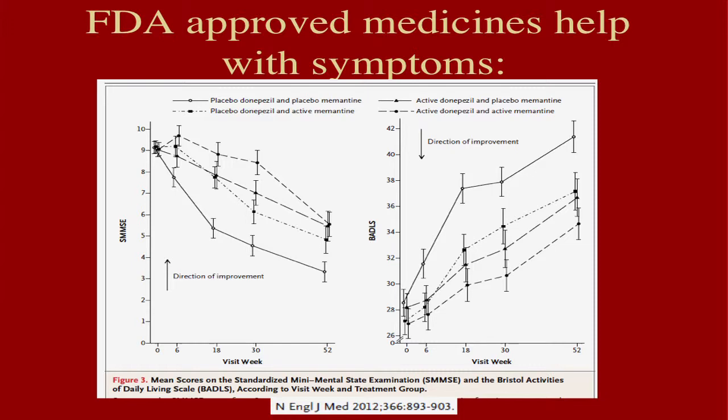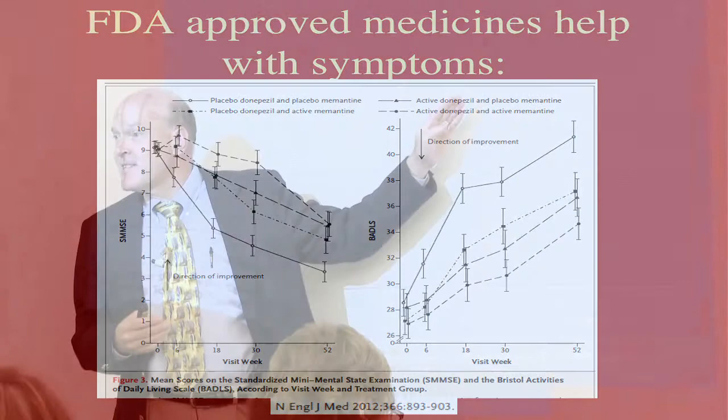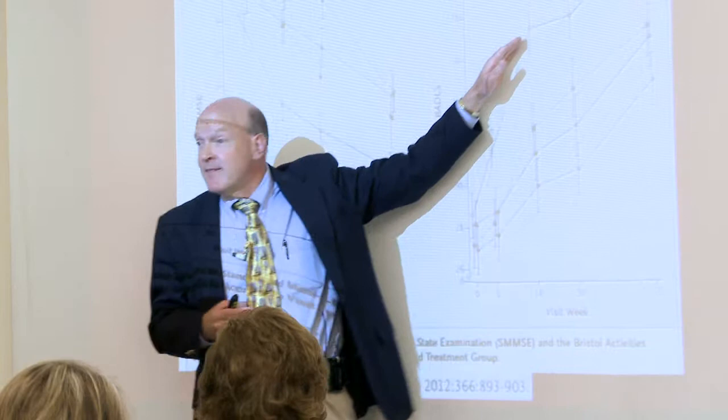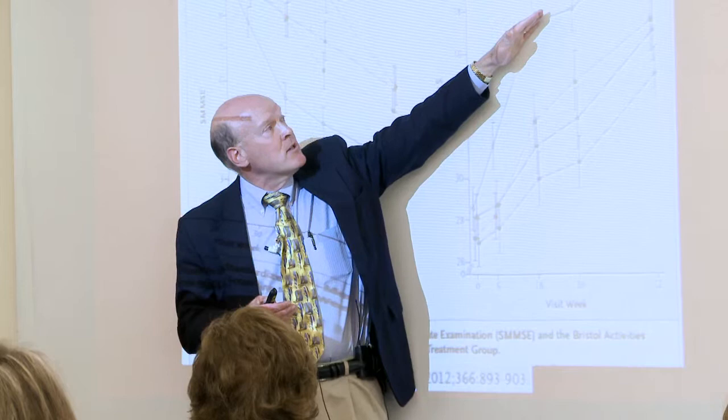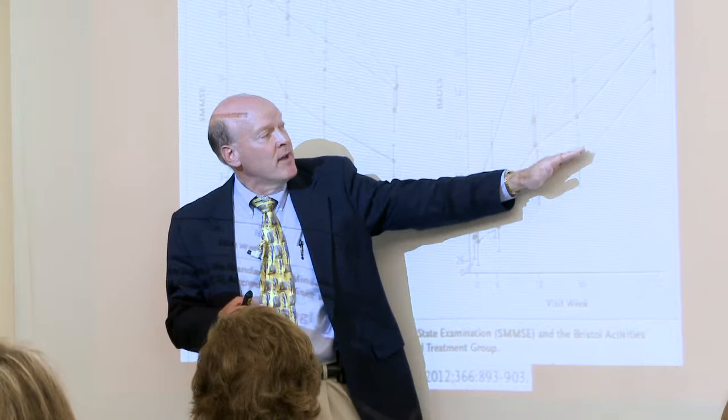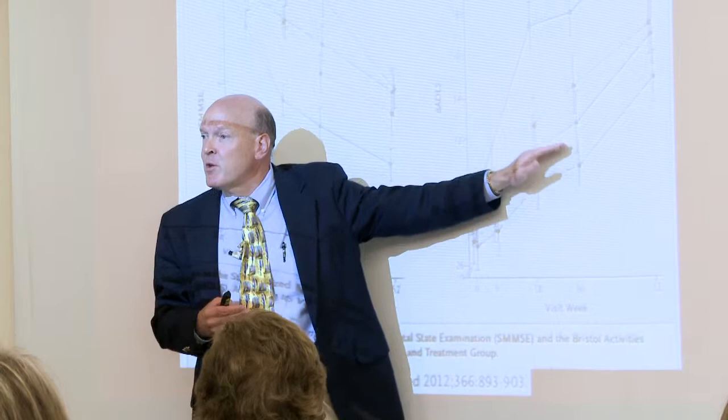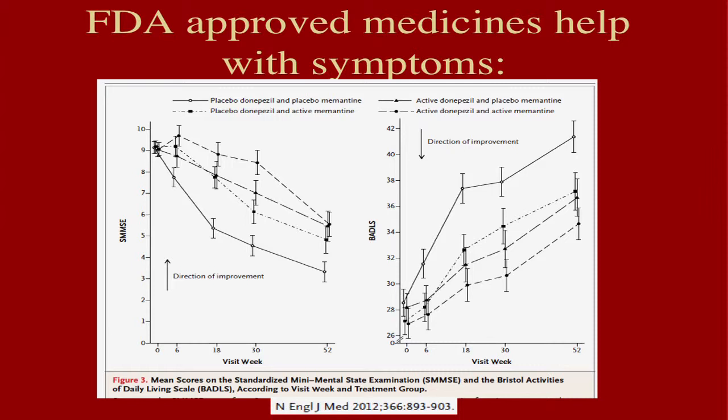This is a relatively recent study, consistent with what we've seen in many other studies. It compares people who were on placebo, people on one drug, people on other drugs, and people on a combination of drugs. You can see there's a separation between those groups. This was a double-blind, randomized, placebo-controlled trial — the gold standard for comparing medicines — and we did see a group separation. But it's really a modest difference in the treated people compared to the untreated people.